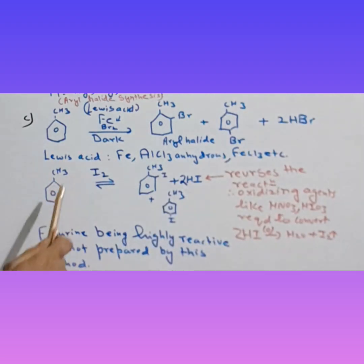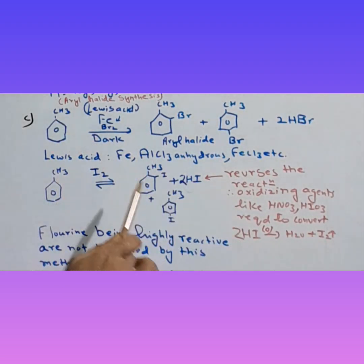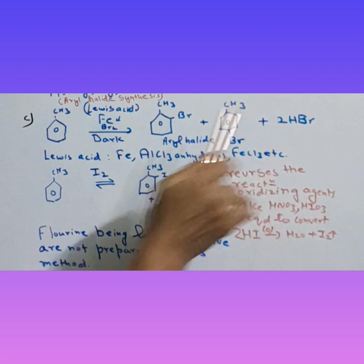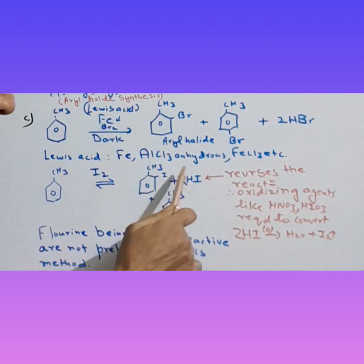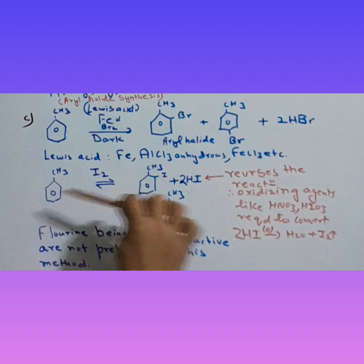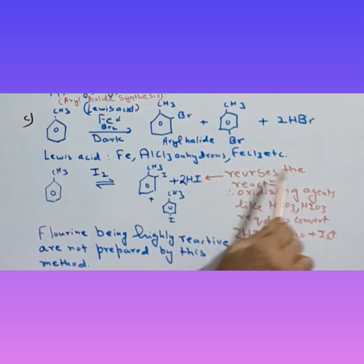Now let's understand the reaction of toluene with iodine. When iodine reacts with toluene under identical conditions, we get ortho-para-iodotoluene. But we also get byproduct HI. The property of HI is that it reverses the reaction in a reversible fashion and gives back toluene. Therefore, we have to eliminate HI.